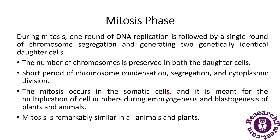The mitosis phase occurs in somatic cells and is meant for the multiplication of cell numbers during embryogenesis and blastogenesis in plants and animals. It is similar in almost all plants and animals because the number of chromosomes derived from the parent is exactly the same — the genetic material is identical.